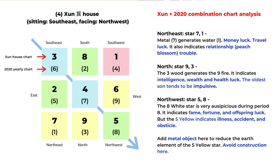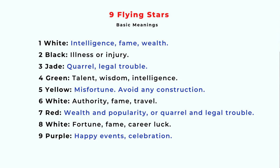The last one is the northwest with stars five and eight. The number eight star is very auspicious, especially in period eight, and can indicate fame, fortune, and offspring luck. But the number five star can bring illness, accident, and obstacles. So display metal objects to reduce the number five earth element, and avoid construction here. That's the basic analysis for the house chart and the 2020 yearly chart. If it sounds too complicated, you can always go back to the basic meaning of the nine stars and set up your feng shui based on the location of these stars. Thank you for watching.